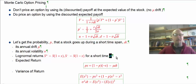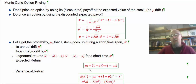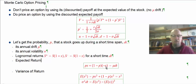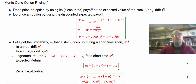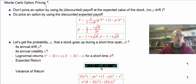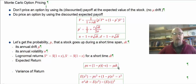Over that short time span dt, the expected return is p × x + (1 − p) × (−x). We set that equal to mu × dt, which is the expected value of the return over that short time span. This gives us one equation with two unknowns: p and x. We get mu from the data as the annualized average return, and we choose dt to be a short time step.